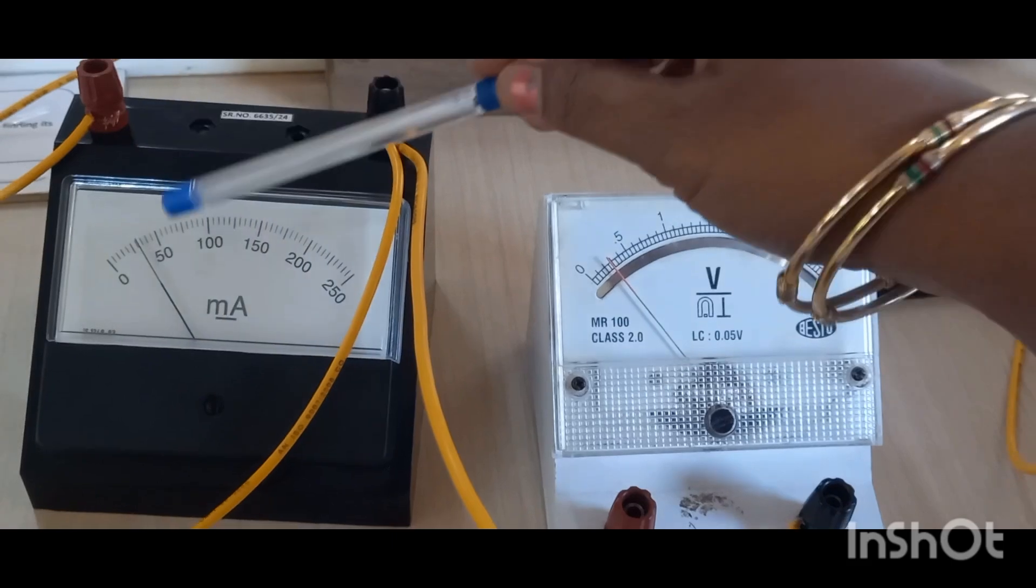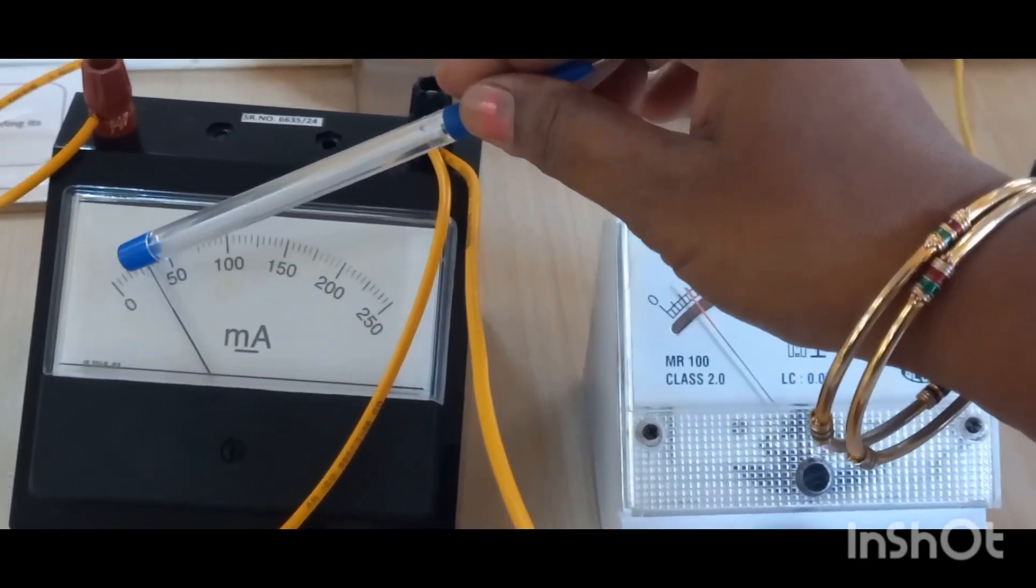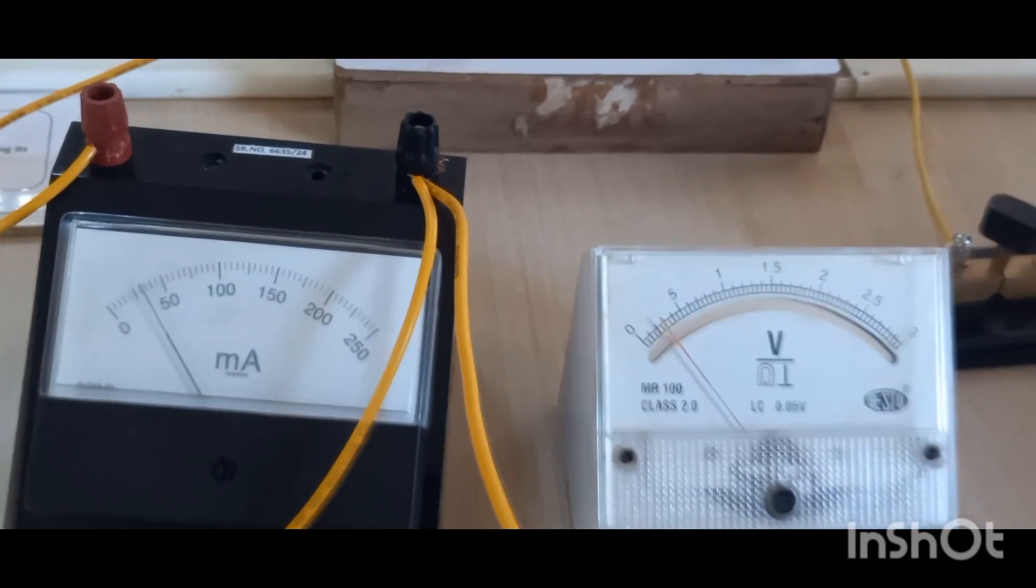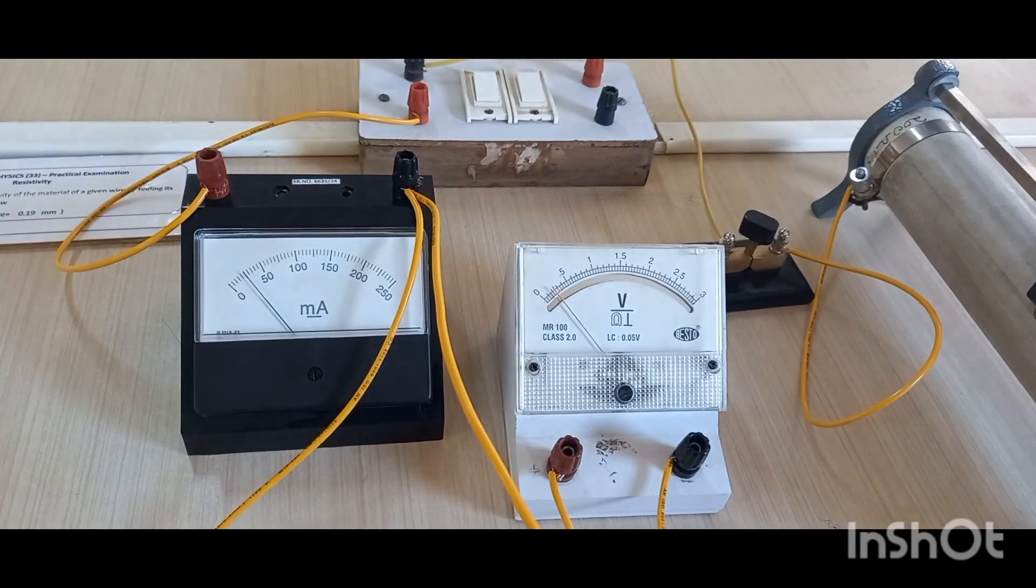So one division is 5 here. For 0.25 it is showing 25 milliampere.